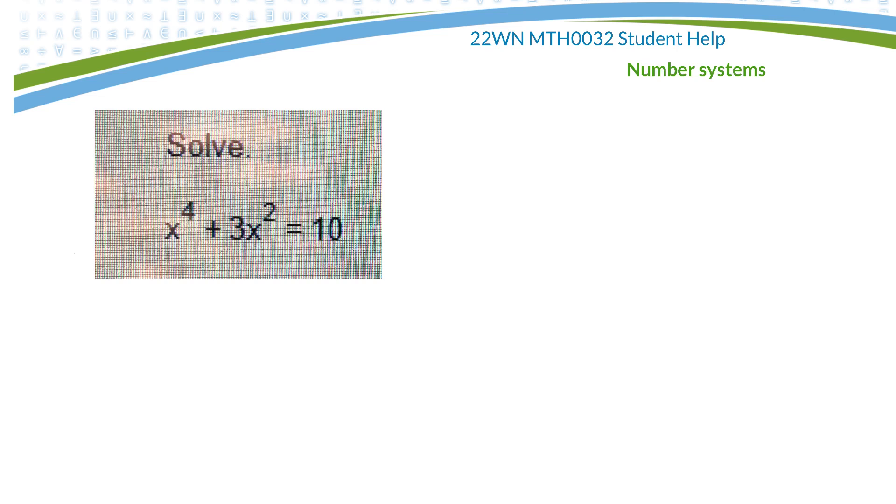All right, here's an interesting question to solve. So x to the fourth plus 3x squared is equal to 10.